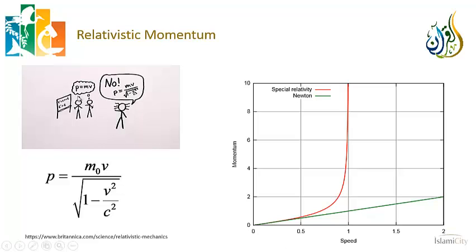In Newtonian physics, momentum — typically expressed with the letter P — is mass times velocity. If an object is moving with a certain velocity and has a certain mass, multiplying those together gives its momentum. Even though a bullet has a very small mass, because it moves so fast it may have a large momentum. An elephant standing still has a very large mass but its momentum is zero, so it cannot impart any energy to anything.